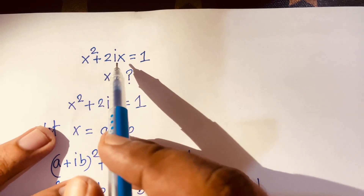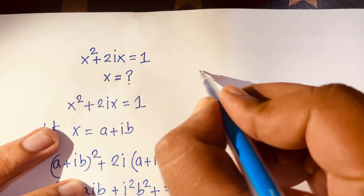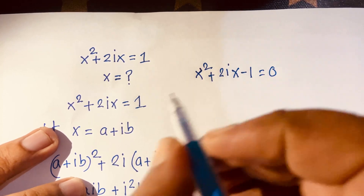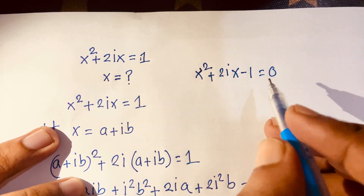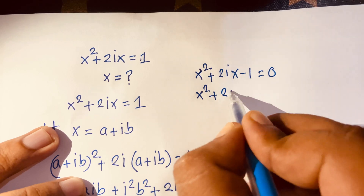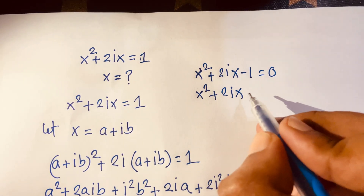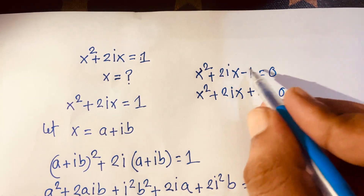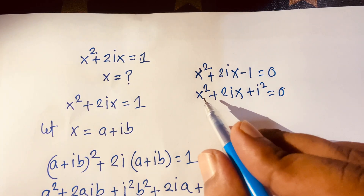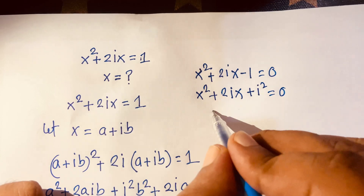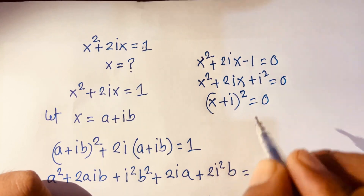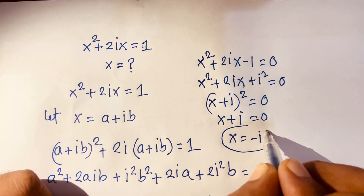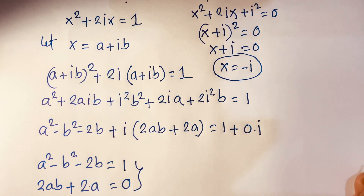For Method 2, rewrite the equation as x² + 2ix + (−1) = 0. Since i² = −1, replace −1 with i², giving x² + 2ix + i² = 0. Recognizing this as a perfect square with a = x and b = i, we get (x + i)² = 0, so x + i = 0, and x = −i. This is our final answer.